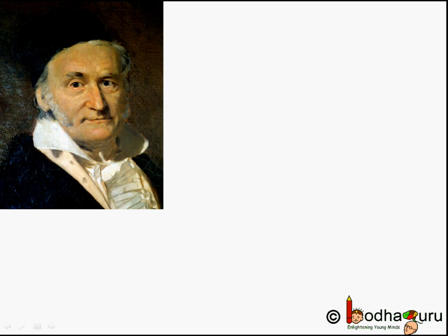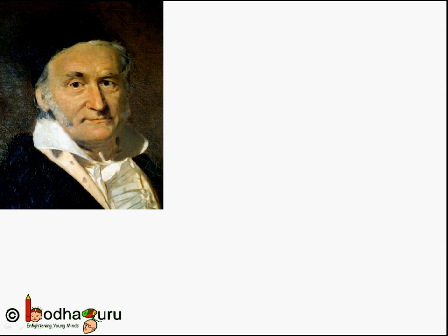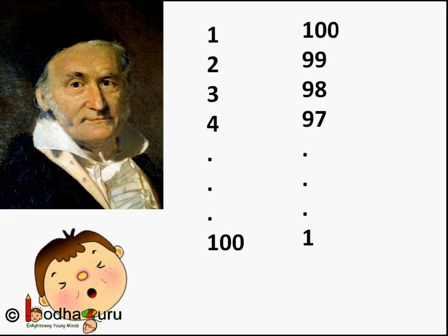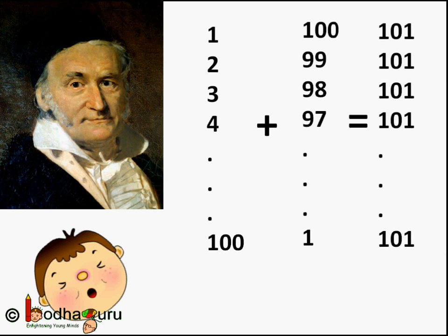Let us first learn about the genius mathematician Gauss. He was able to sum from 1 to 100 within seconds when he was in elementary school. How is it possible? He was a curious child who found a pattern in these numbers: 1 + 2 + 3 + 4 + ... + 100. If we reverse that order you get 100 + 99 + 98 + 97 + ... + 1. He organized the numbers into two lists and added the corresponding values. He found that 1 + 100 = 101, 2 + 99 = 101, 3 + 98 = 101, and so on.